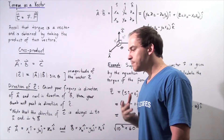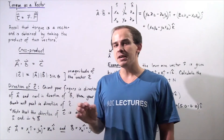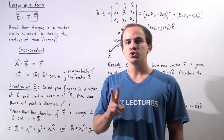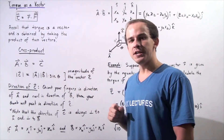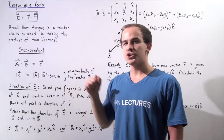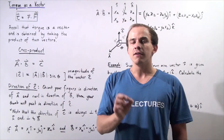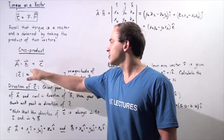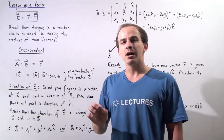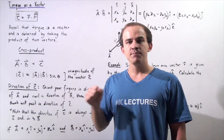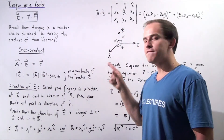Generally speaking, suppose we have two vectors A and B. We can take the cross product of those two vectors and get a third vector, let's say vector C. To find the magnitude of vector C, we take the product of the magnitudes of vector A and vector B and multiply that product by the sine of the angle theta between vectors A and B. This equation gives us the magnitude of vector C.